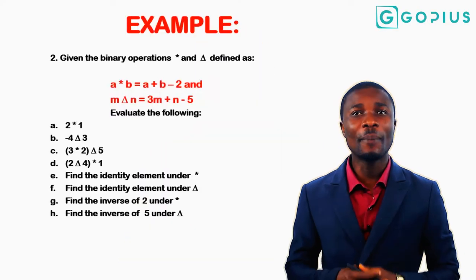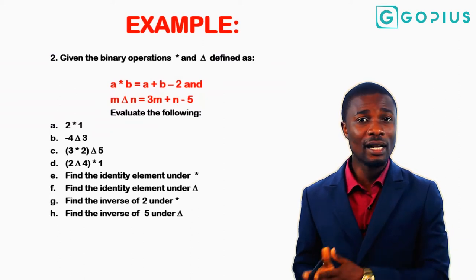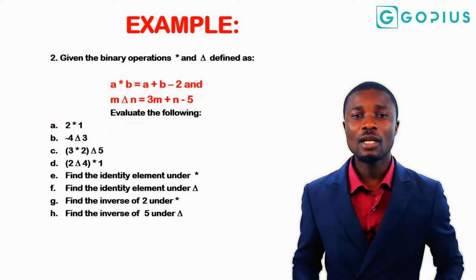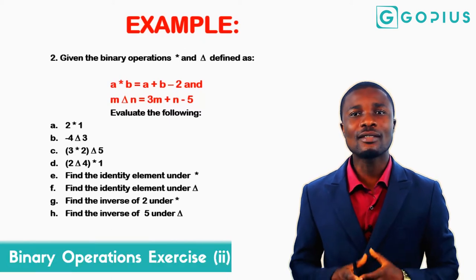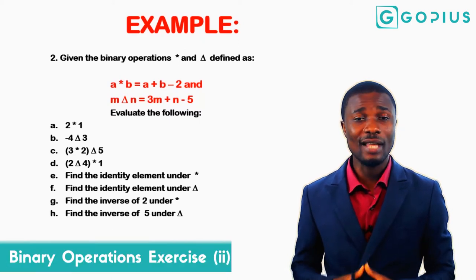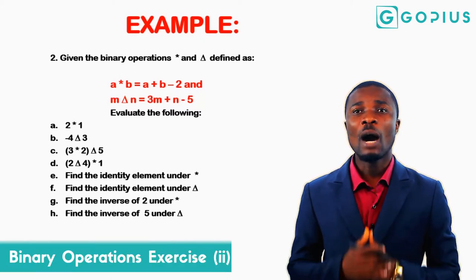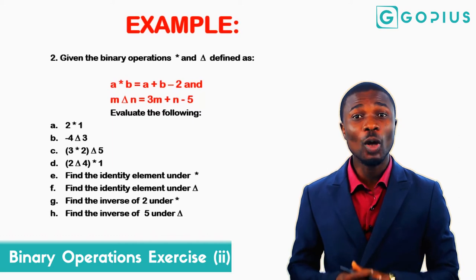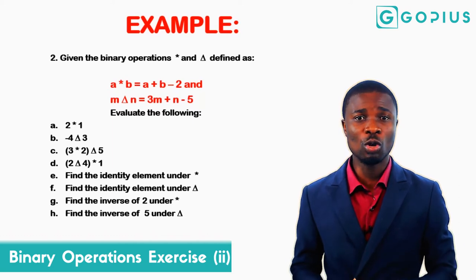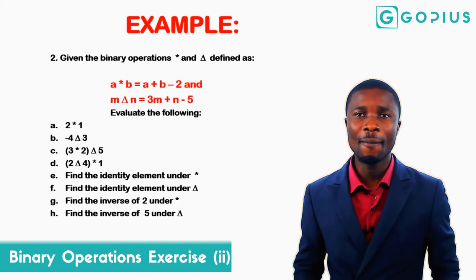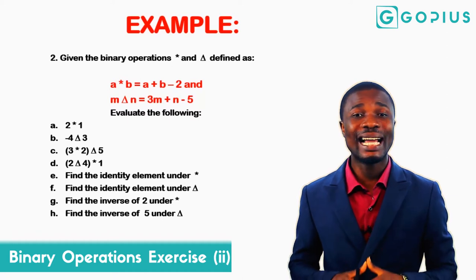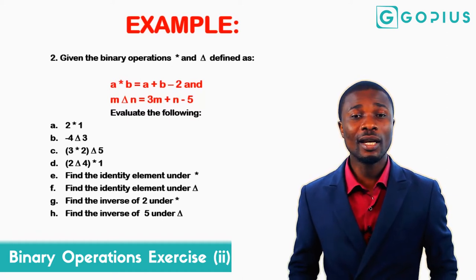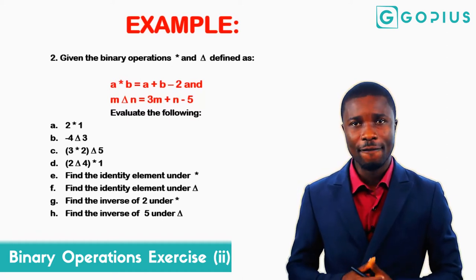On the screen we have given two binary operations: star and delta. Star is defined as a star b equals a plus b minus 2, and the other operation delta is defined as m delta n equals 3m plus n minus 5.